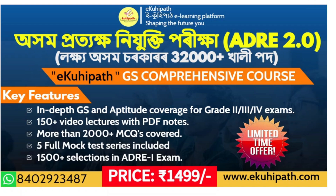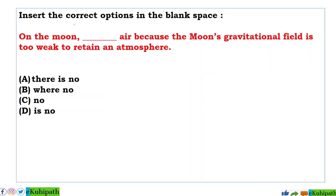Let's discuss questions. Insert the correct option in the blank space. On the moon, dash, air — because the moon's gravitational field is too weak to retain an atmosphere. So, what is the meaning? It means the gravitational field is too weak to retain an atmosphere.